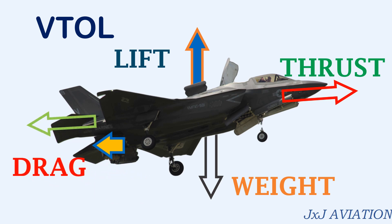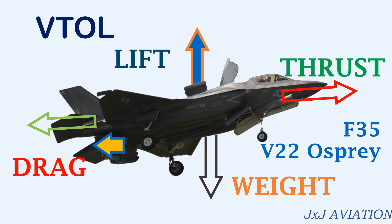Some examples of VTOL fixed wing aircraft are the F-35 as shown here, and the V-22 Osprey, which also have the capability to hover just like a helicopter.